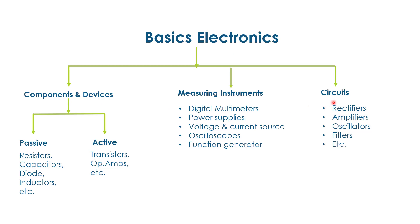Electronics has a number of components, devices, measuring instruments, and circuits. A device which controls the flow of electrons is called an electronic device; these devices are the main building blocks of electronic circuits. There are basically two types of components: passive components and active components. Passive components include resistors, capacitors, diodes, and inductors.